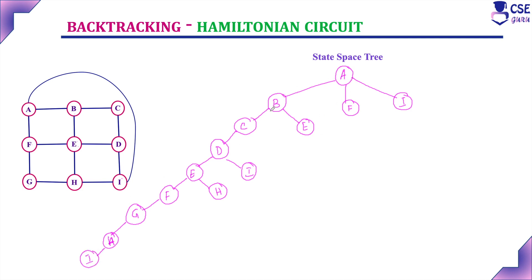Checking this path: A, B, C, D, E, F, G, H, I — all the vertices in this given graph have been visited exactly only once. And from I, it is possible to return back to A. So this is one solution.